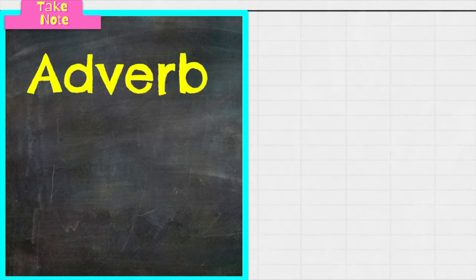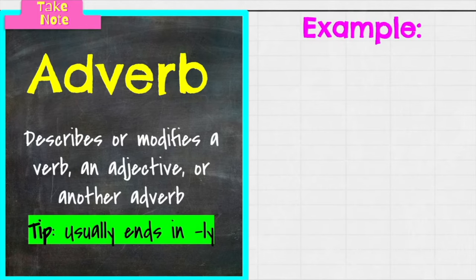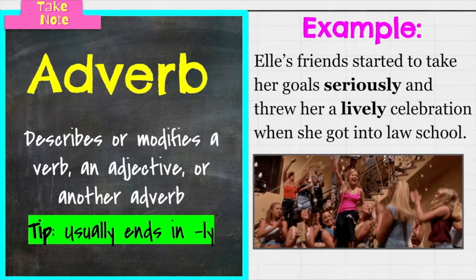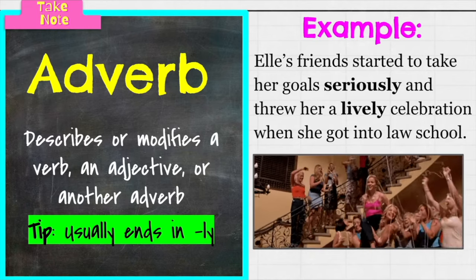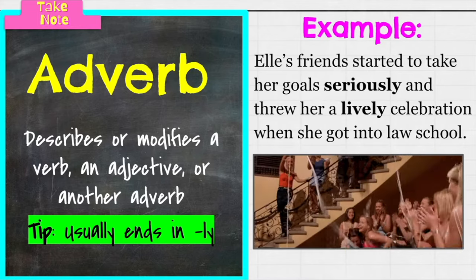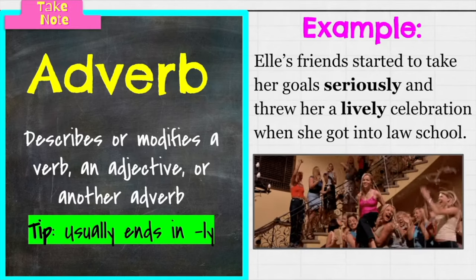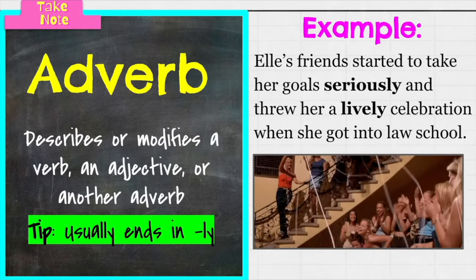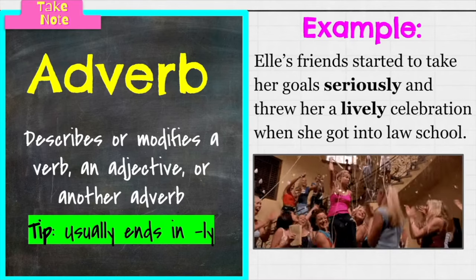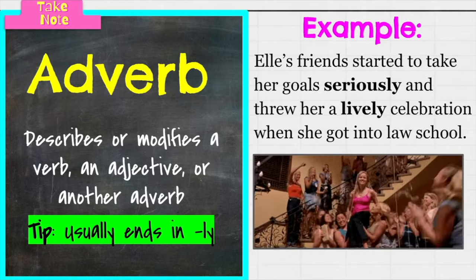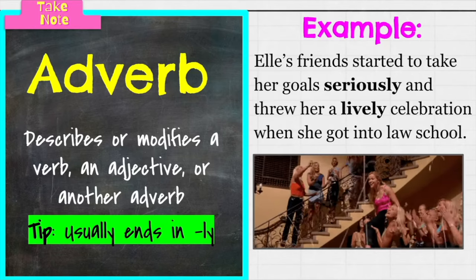Up next, adverb — it has the word verb in there because it's describing or modifying a verb, but also an adjective or other adverbs. My tip: usually — not all the time, because there are always exceptions — adverbs end in L-Y. You're telling how you're doing the verb. Example: Elle's friend started to take her goals seriously. How are they doing it? Seriously — that's our adverb. They also threw her a lively celebration when she got into law school. Lively describes the celebration, so it's an adverb. As you can see, they end in L-Y, which is a good indicator.